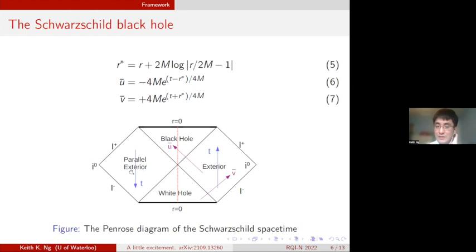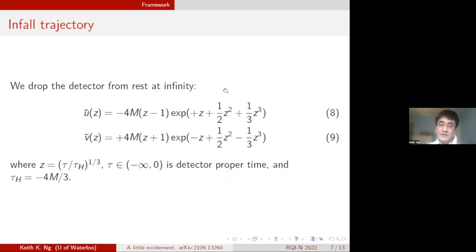As for the classical trajectory, we drop the detector at rest from infinity. The Kruskal coordinates with respect to the proper time behave like this, with respect to this parameter z where z equals the detector proper time over the horizon crossing time to the one-third. Tau is the detector proper time moving in the positive direction from negative infinity to zero, and the horizon crossing time is minus 4M over 3.